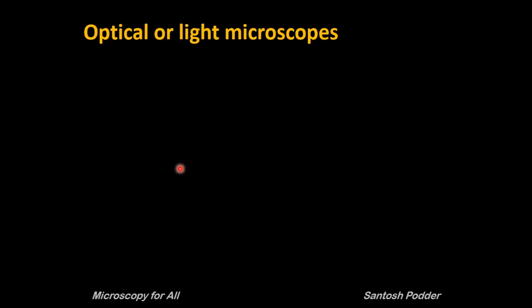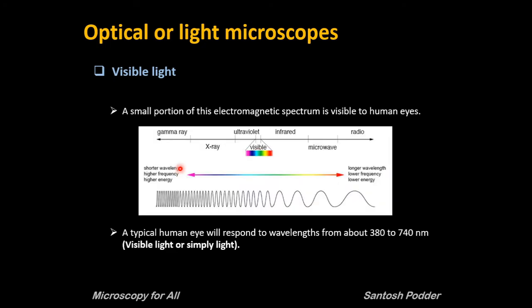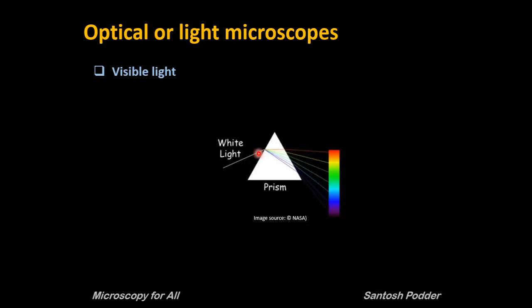Optical or light microscopes use visible light. What is visible light? It is a small portion of the electromagnetic spectrum which is visible to human eyes. This visible light appears as white, which is a combined light of individual rainbow colors ranging from 380 to 740 nanometers.